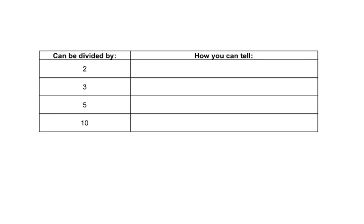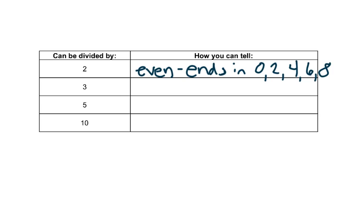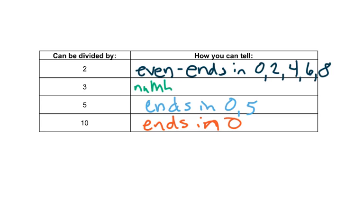We want to know how we can tell easily and quickly, without a calculator, if something can be divided. A number can be divided by 2 if it's even — meaning it ends in 0, 2, 4, 6, or 8. A number can be divided evenly by 5 if it ends in 0 or 5. It can be divided by 10 if it ends in 0. And 3 is different — a number can be divided by 3 if its digits add up to something that can also be divided by 3. We'll look at an example in a minute.